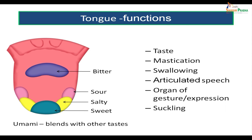Umami is a savory taste which comes from cooked meats, and is generally felt all over the central parts of the tongue. So the basic taste sensations include sweet, salty, sour, bitter, and umami. In addition to taste, the tongue helps in mastication and swallowing of food, is essential for articulated speech, is an organ of gesture and expression, and an organ for suckling by infants.